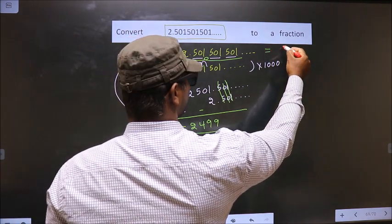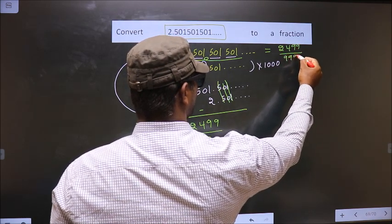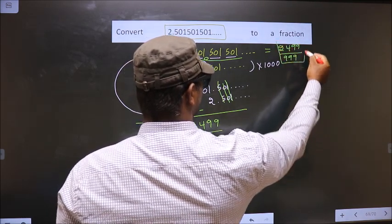So it equals 2499 by 999. So this is our answer.